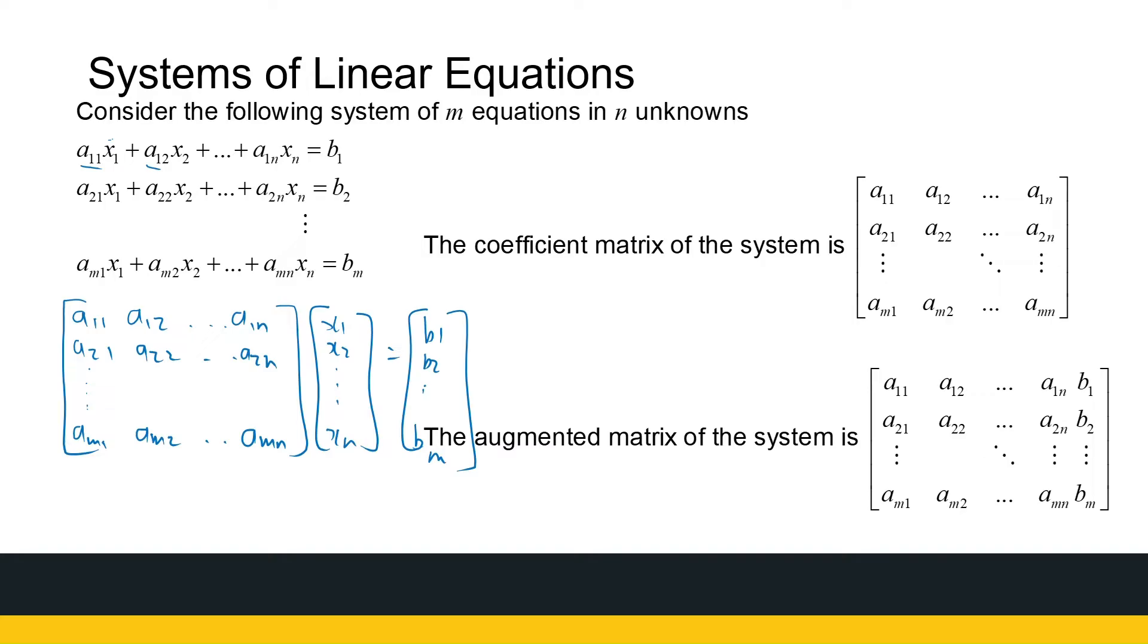So this is my matrix equation describing the system of m equations in n unknowns. Now I can define what we call our coefficient matrix of the system. That's the matrix here on the left-hand side. That's my coefficient matrix that consists of the coefficients of all my unknowns in my system of equations. Just take note, the order is very important. You have to have your unknowns in the same order. If there's a missing one, for example, if there are no x2s in the first equation, we put a zero there.